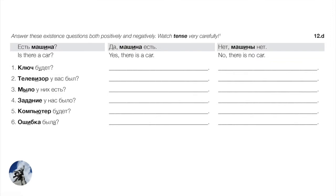Now let's do exercise 12D — ask questions and respond both positively and negatively, matching the tense. For example: Есть машина? Да, машина есть — positive answer. Or negatively: нет, машины нет. For future: Ключ будет? Да, ключ будет. Or negatively we have to change the grammar and use the genitive.